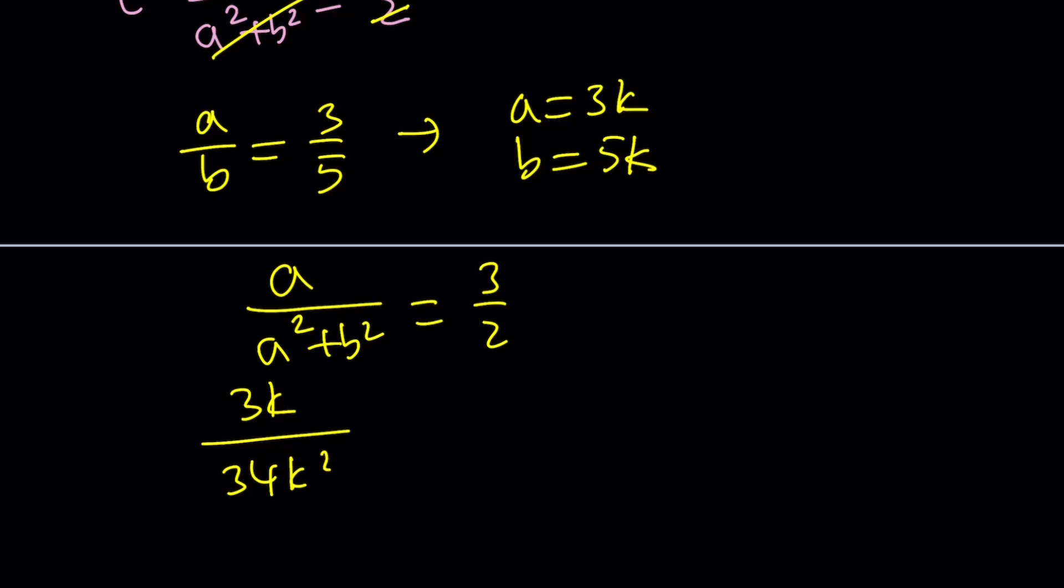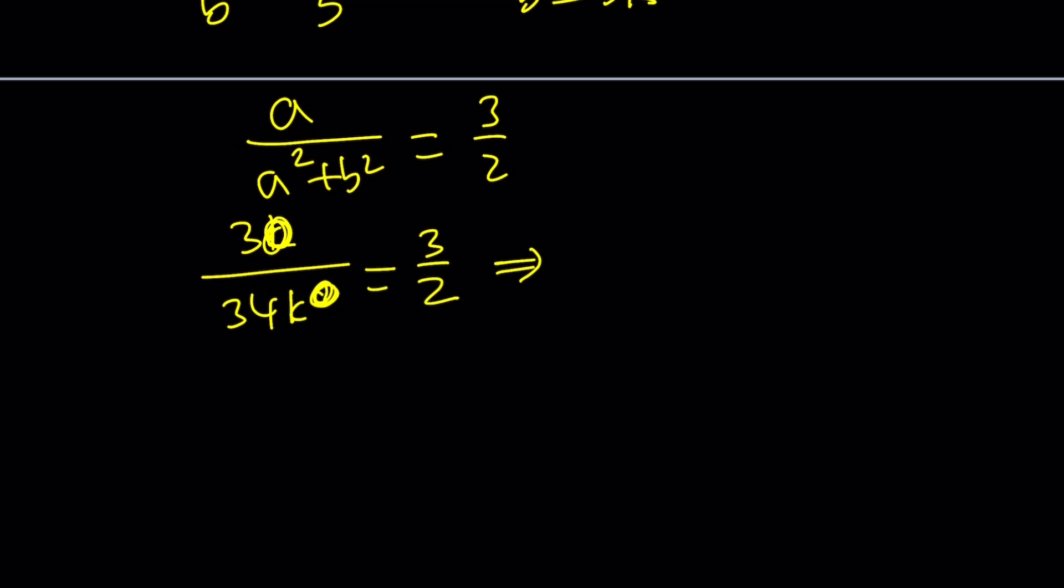If you replace A with 3k and divide by 9k squared plus 25k squared, we're going to get 34k squared equals 3 over 2. From here we can solve for k, and this gives you 102k equals 6. Then k is going to be 3 over 51. Wait a minute, 3 goes into 51 doesn't it? Yes, because it is 3 times 17. So k equals 1 over 17.